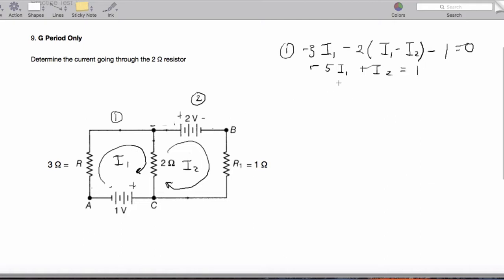Let me make sure I got that right. No, that's plus 2I2 because we're going to distribute that negative two. So negative 5I1 plus 2I2 equals one. Now for the second loop.